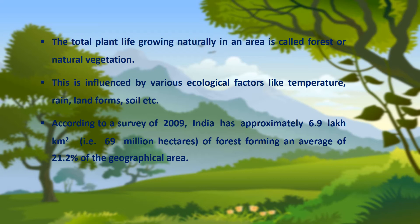India is a vast country having various types of natural environment, and based on the natural vegetation, they can be divided into six main types.